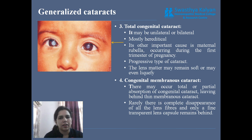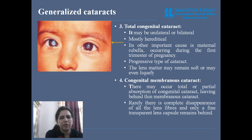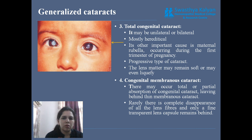Total congenital cataract can be unilateral or bilateral. It is most commonly associated with hereditary factors, generally associated with maternal rubella, and is a progressive type of cataract where the lens eventually degenerates, becoming soft and liquefied. Membranous cataract results from total or partial absorption of congenital cataract — a cataract forms, then it absorbs or degenerates, leaving only a membrane behind. It is known as membranous cataract and may sometimes be misdiagnosed.